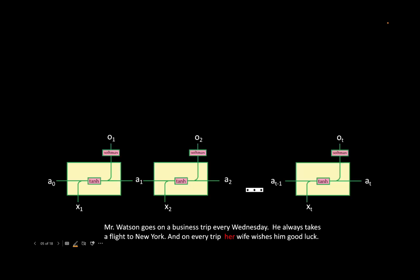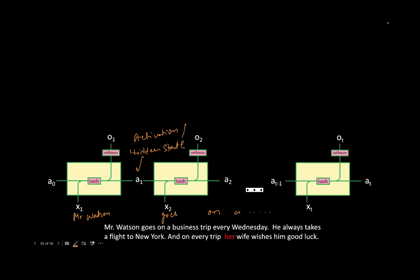In simple RNN, every input is passed at different timestamps. At the first timestep 'Mr. Watson' will be passed, then 'goes' will be passed, 'on a business trip', and so forth. This activation A, also called the hidden state, acts like a memory context. It holds the contextual information that it has seen so far. For example, Mr. Watson's subject, business trip, and Wednesday are all valuable pieces of information stored as a matrix. The combination of different values in this matrix creates the context.